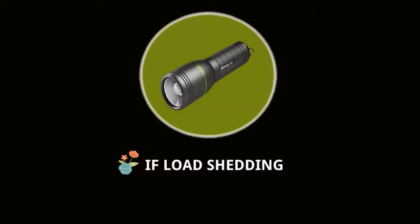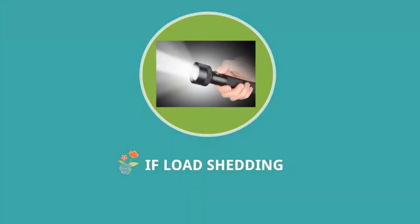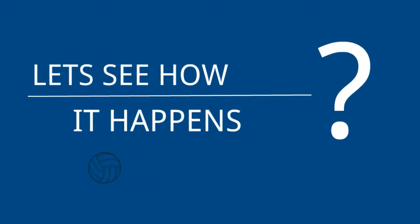If load shedding happens, are you able to see anything? No, we cannot see. So what do we do? We take a torch light and we switch on, then we can see everything around us. Let's see how it happens.